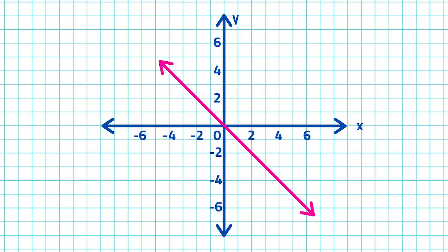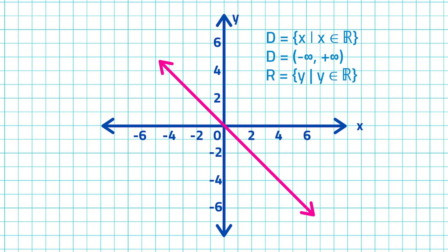Now, let's try finding the domain and range of functions represented in graphs. If the relation is graphed on the rectangular coordinate, we can find the domain by identifying all possible values of x. Thus, we need to specify which values can be excluded as inputs to the function. Take a look at these graphs. The graph extends infinitely in both directions. Therefore, the domain is the set of all real numbers. Domain is the set of all x such that x is an element of all real numbers. In interval notation, domain is from negative infinity to positive infinity. The range is also the set of all real numbers. The range is the set of all y such that y is an element of all real numbers. In interval notation, range is from negative infinity to positive infinity.